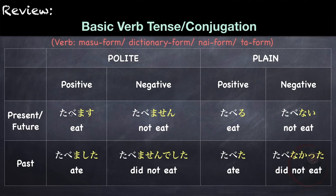The negative present or future tense uses the nai form of the verb. For example, tabenai — we just change masu to nai. So it is the same as tabemasen, only in plain form. And lastly, the negative past form of the verb ends in nakatta. For example, tabenakatta. This is the same as tabemasen deshita.